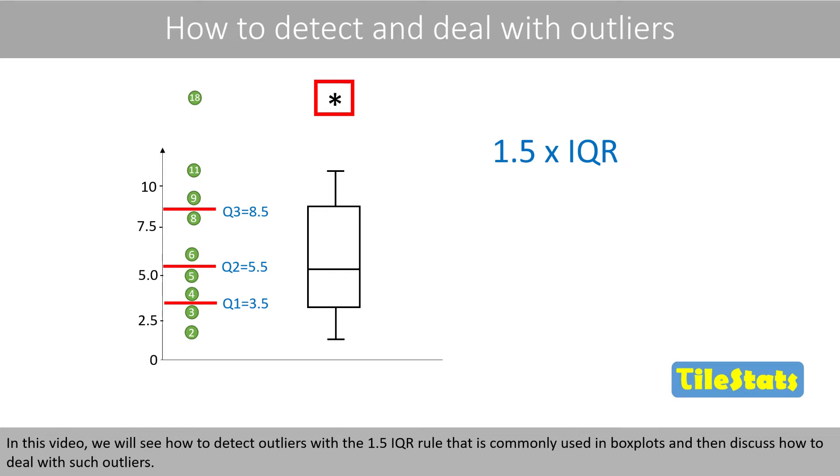In this video, we'll see how to detect outliers with the 1.5 IQR rule that is commonly used in box plots and then discuss how to deal with such outliers.